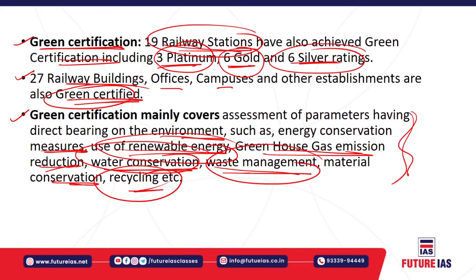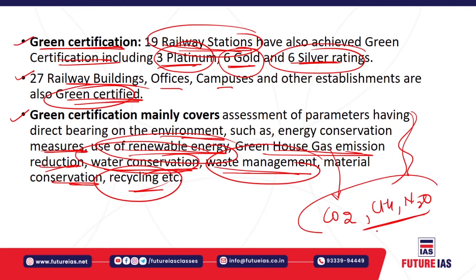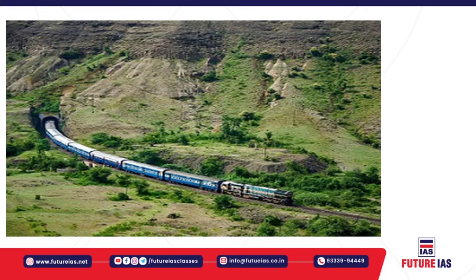A green building conserves energy, reduces greenhouse gas emissions (carbon dioxide, methane, nitrous oxide), uses renewable energy as much as possible, and applies energy conservation practices — recycling of waste, waste management, water conservation — everything related to the conservation aspect: the reduce, reuse, and recycle principles.